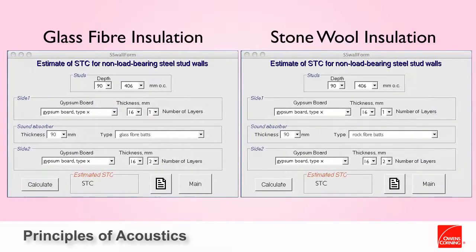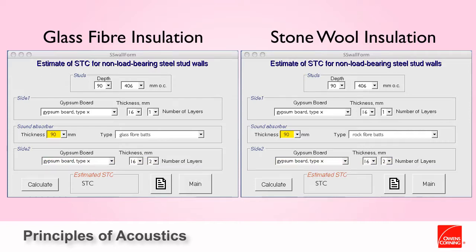The user has the option to adjust the stud depth and spacing, the gypsum board on either side, as well as cavity insulation. Let's try a partition with stud depth of 90 mm spaced 406 mm on center, with a single layer of 16 mm Type X gypsum board on one side, while the opposite side features two layers. The final adjustment is to fill the cavity insulation to at least 90% of the stud depth. Clicking Calculate shows the glass fiber assembly yields an STC rating of 51, while stone wool delivers one less at 50.